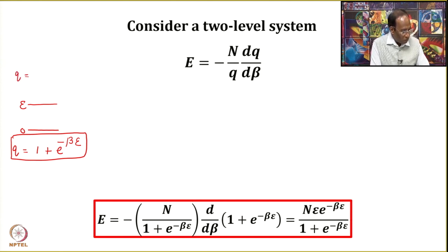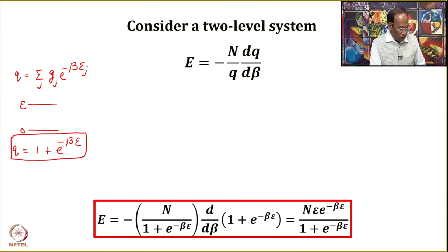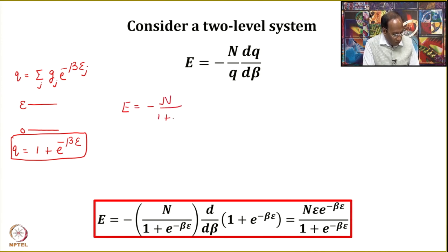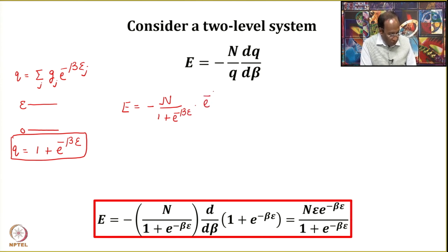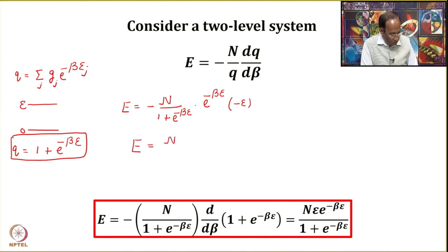The total energy is E = −(n/q)(dq/dβ). With q = 1 + exp(−βε), we get dq/dβ = −ε exp(−βε). Substituting, E = −(n/q) × (−ε exp(−βε)), which gives E = nε exp(−βε) / (1 + exp(−βε)).